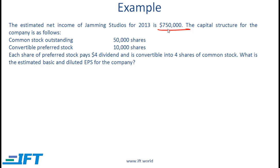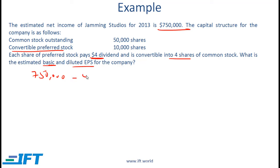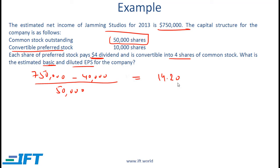We are given net income of 750,000 and the company has 50,000 shares outstanding and convertible preferred stock of 10,000 shares. Each share of preferred stock pays a $1 dividend and is convertible into 4 shares of common stock. For basic EPS, we take 750,000 and subtract the preferred dividend, which is 10,000 × $4 = 40,000, divided by 50,000 shares outstanding. The basic EPS is 14.2.